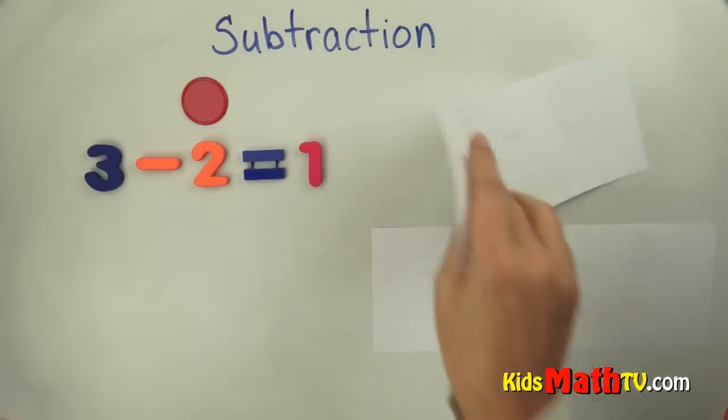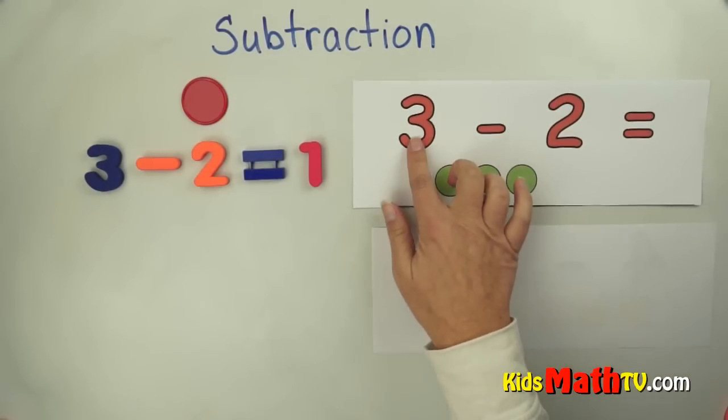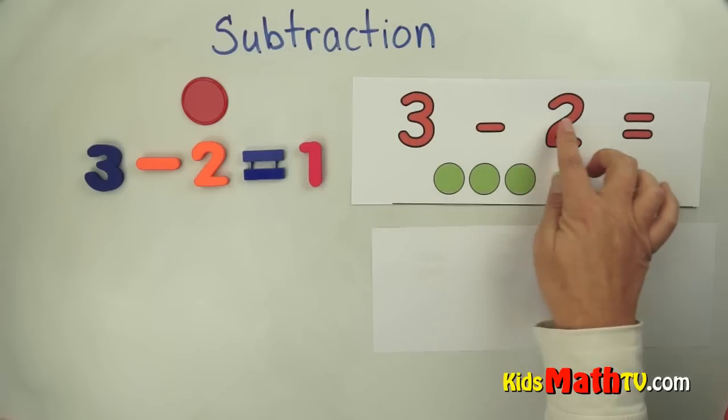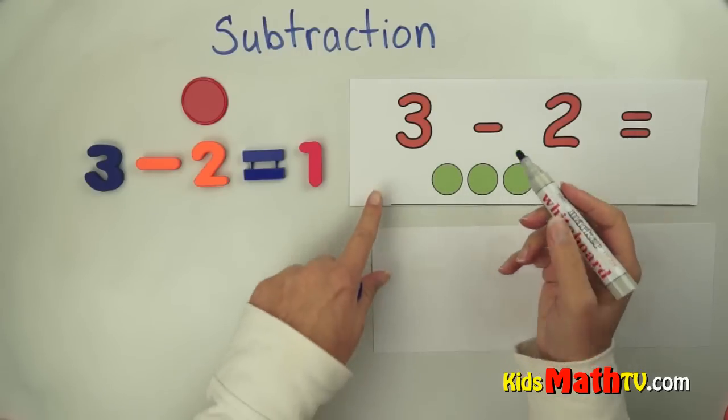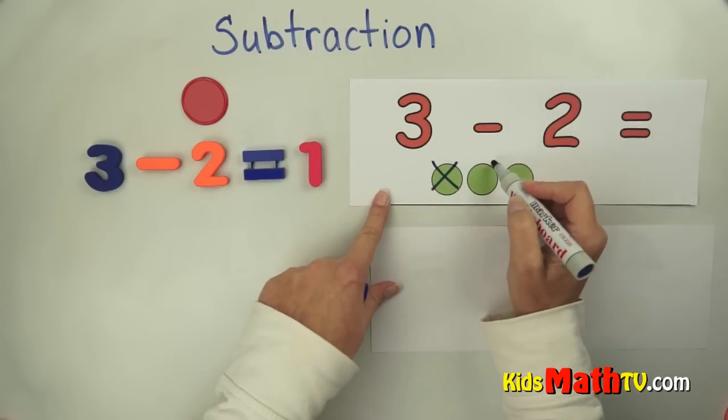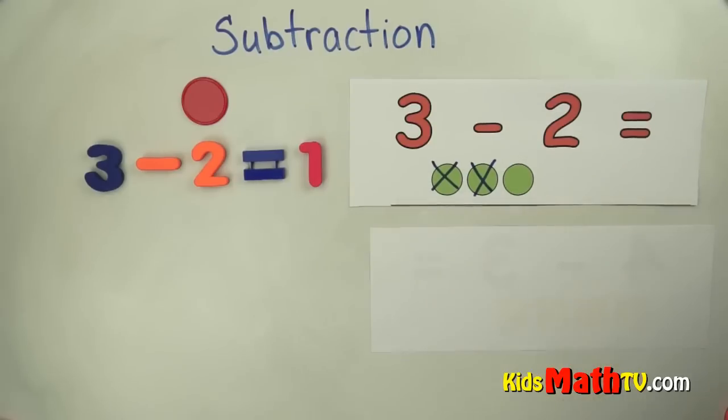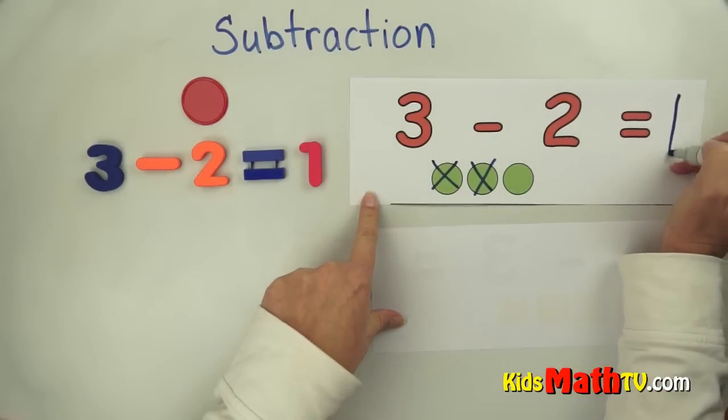We can show that in writing. Three, take away two, equals. Well to show that on here we start with three: one, two, three. And let's take them away. Let's cross them out. Take away two. How many are left over? One is left over.